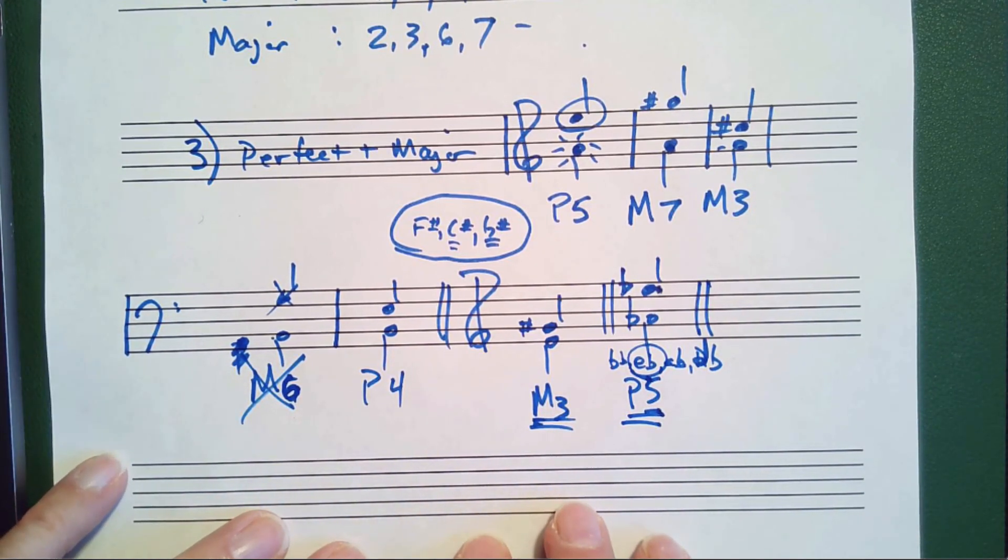In the next video, I'll explain what happens when a note is not a major third or a perfect fifth, if it happens to be a half step larger or a half step smaller.